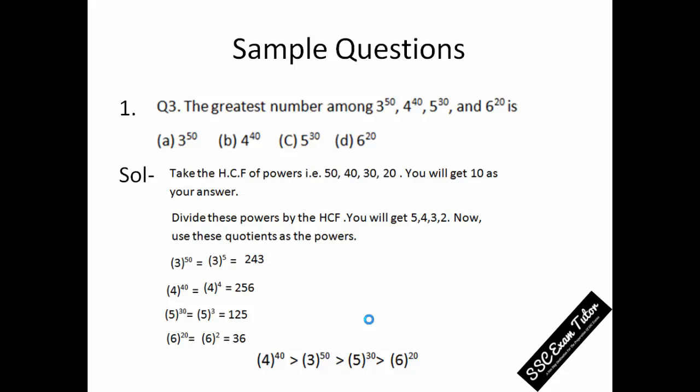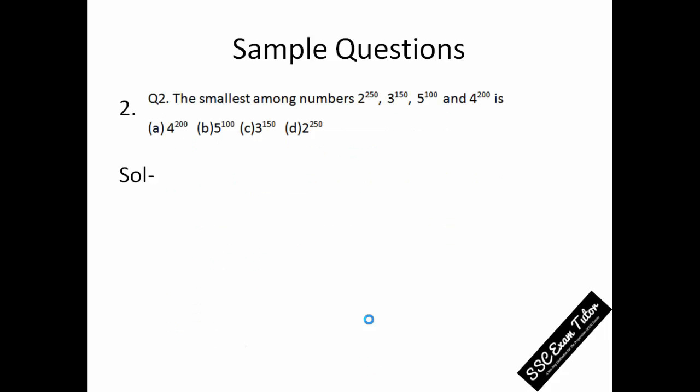Here I want to clarify that these values—the value of 3 to the power 50 is not 243. Don't consider it. I am using this method because it's a shortcut. It doesn't take too much time, so don't consider that the value of 3 to the power 50 is equal to 243.